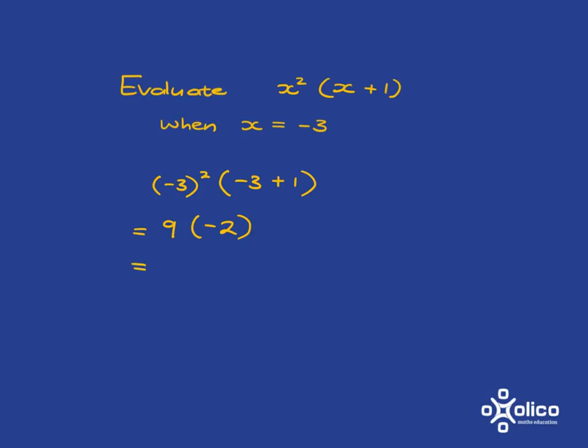And remember, when you've just got these two things next to each other, it means multiplication. So 9 multiplied by negative 2 gets me to negative 18.